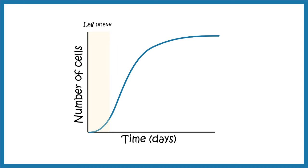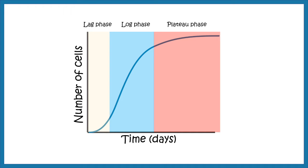Primary cell cultures have different growth kinetics. First there is a lag phase where there is no significant growth, followed by a log or exponential growth phase where cells grow exponentially. Finally, as cells grow, the media becomes limiting and there is not enough surface area for growth, leading to a plateau phase.